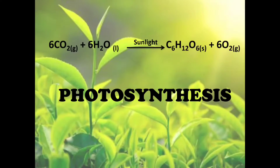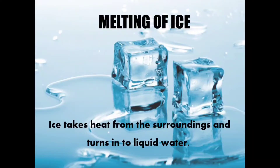Let's discuss a few more examples of endothermic reactions. Photosynthesis — we all know that plants prepare their own food by the process of photosynthesis, where carbon dioxide reacts with water in the presence of sunlight to form glucose and oxygen. Melting of ice is also an endothermic process, because during melting, ice takes heat from the surroundings and turns into liquid water — since heat is taken in, the process is endothermic in nature.